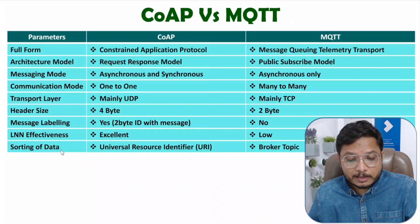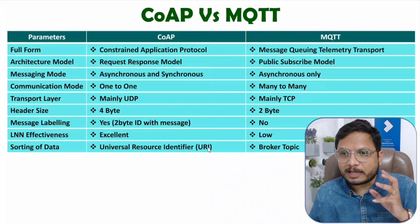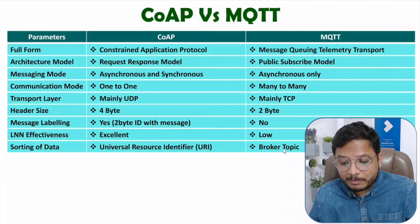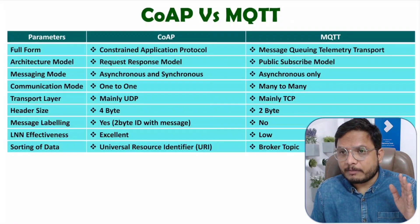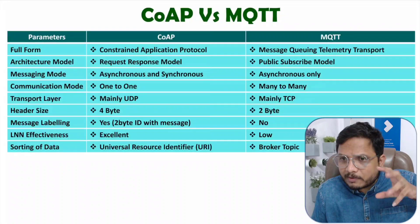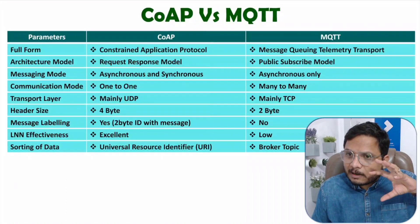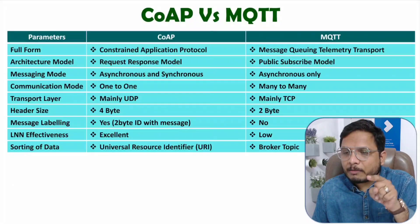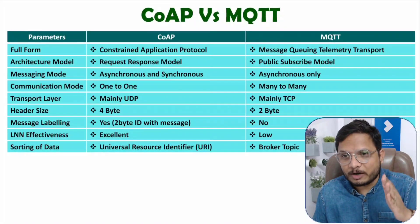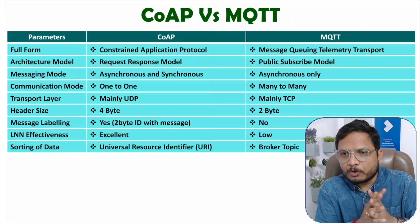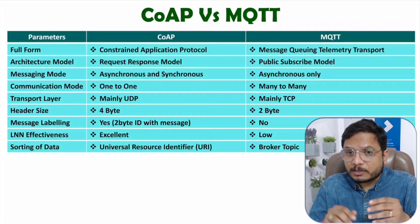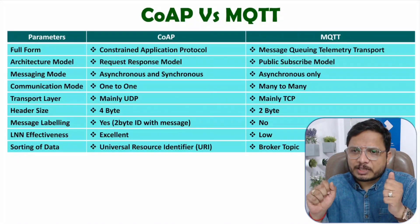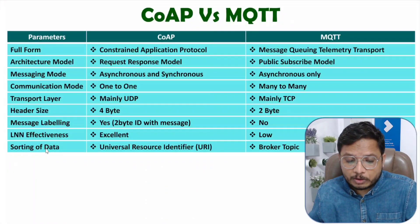Regarding sorting of data: in CoAP protocol, the Universal Resource Identifier (URI) is used for sorting the data. While with MQTT protocol, the broker defines topics. Sorting of data means how data is segregated. In MQTT, the broker defines topics and data is sorted based on those topics. In CoAP, the URI handles data sorting where 1-to-1 communication is happening. That is how data sorting works in both protocols.